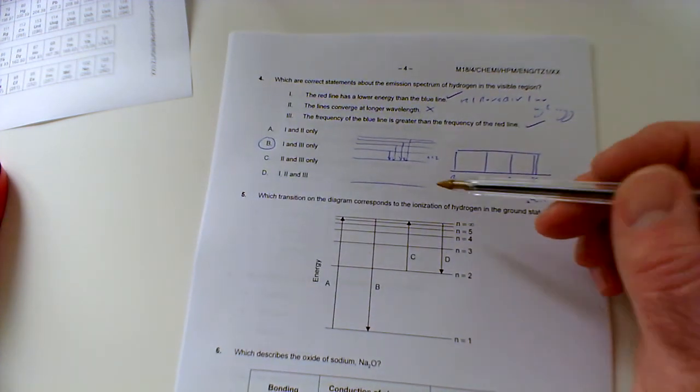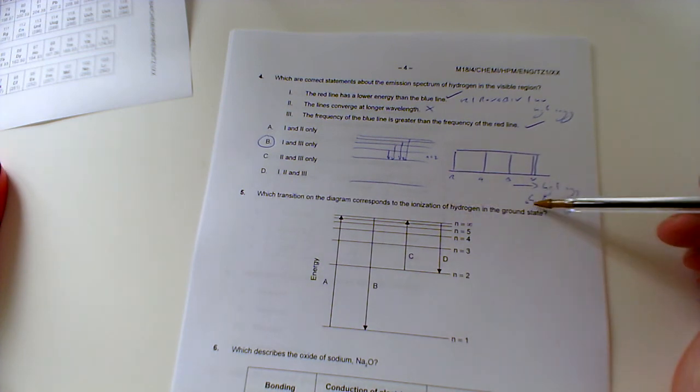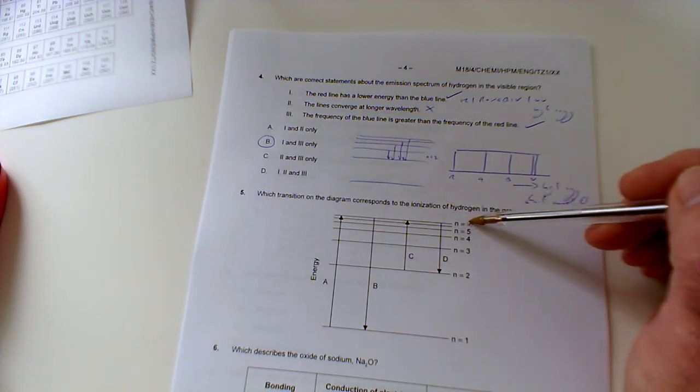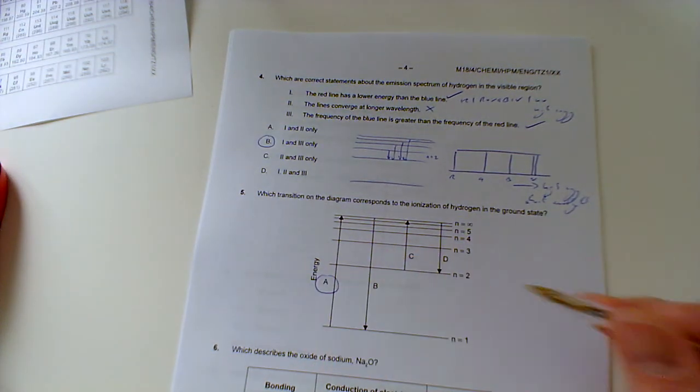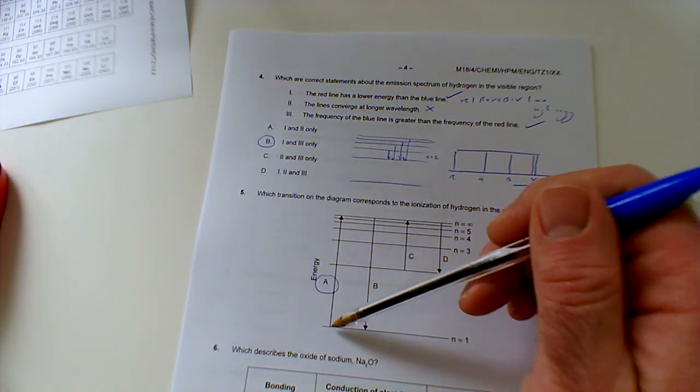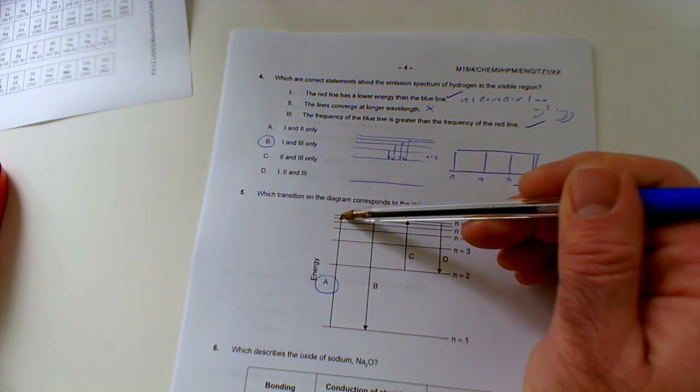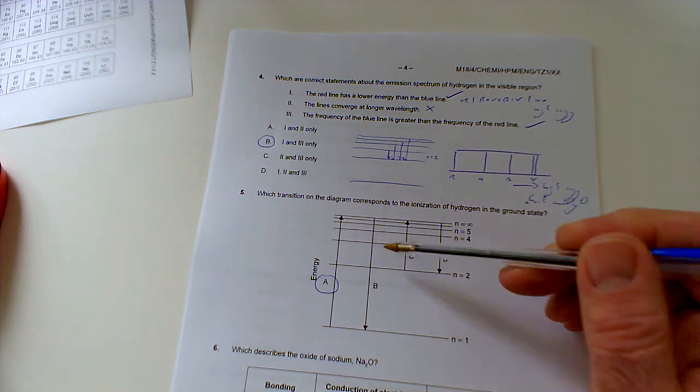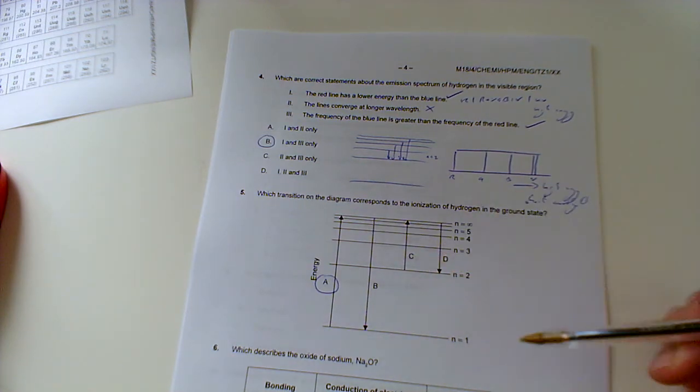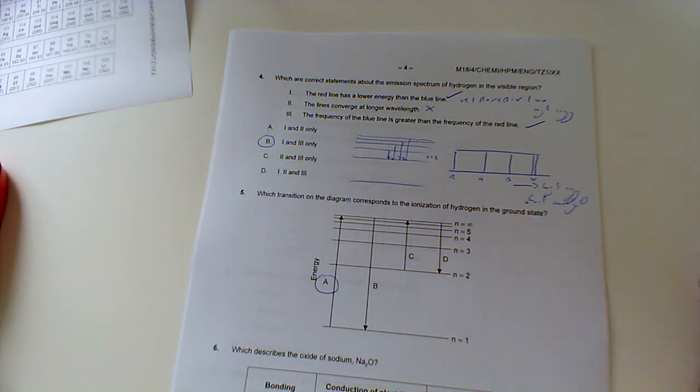Which transition on the diagram corresponds to the ionization of hydrogen in the ground state? The ionization energy would be where it reaches N equals infinity, and it would have started from the ground state. So we're looking at this one here. In the ground state, the electron is in the first energy level of hydrogen, and when it reaches N equals infinity, that's when it's left the atom. This would be the reverse of that ionization energy. This would be exothermic, that would be endothermic. And these are where the electrons have already been promoted to N equals two, which would be in an excited state.